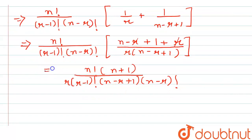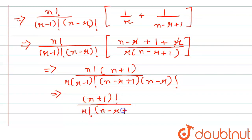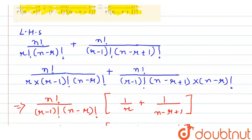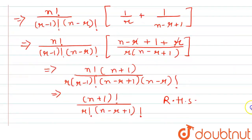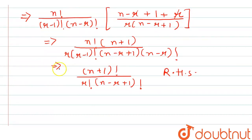We can write this expression as N plus 1 factorial divided by R factorial into N minus R plus 1 factorial. This is the RHS, hence LHS is equal to RHS, which is N plus 1 factorial by R factorial into N minus R plus 1 factorial. So, LHS equals RHS.